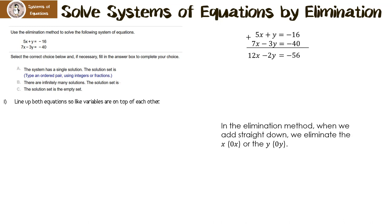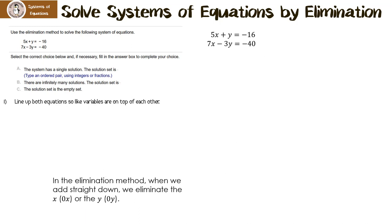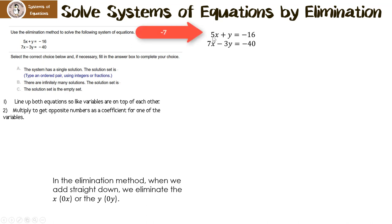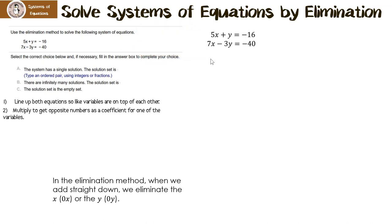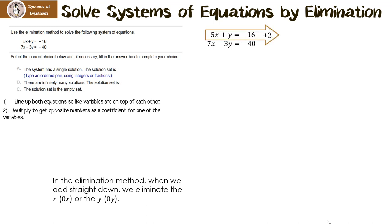So I have to do something else. We're going to have to multiply either one or both of the equations so we end up with opposite numbers. To get the x terms opposite, I'd have to multiply one by negative 7 to make negative 35, and the other by positive 5 to get positive 35 — but that's a lot of work. Let's look at the y's. If I multiply the first equation by 3, we'd get 3y minus 3y, which is 0y. So I'm going to multiply the first row by 3: 3 times 5x is 15x, 3 times y is 3y, and 3 times negative 16 is negative 48.